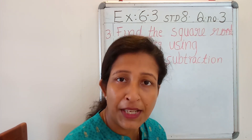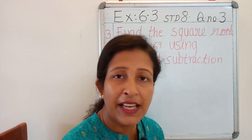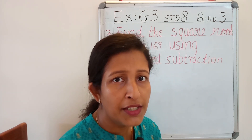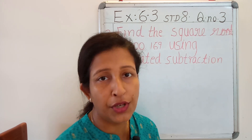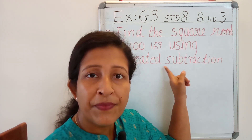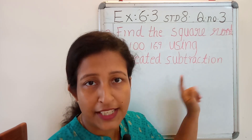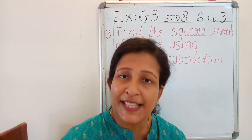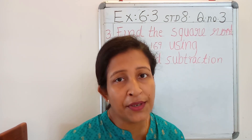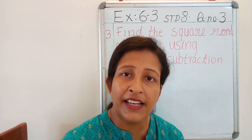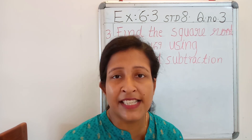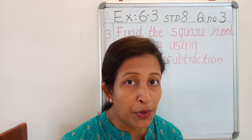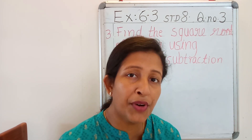So we have studied two methods — do you remember that? Repeated subtraction method and prime factorization method, for finding the square root of numbers. Now they are asked to use the repeated subtraction method. Repeated subtraction method is based on the concept that every square number can be expressed as the sum of first odd natural numbers, and it should start from 1.